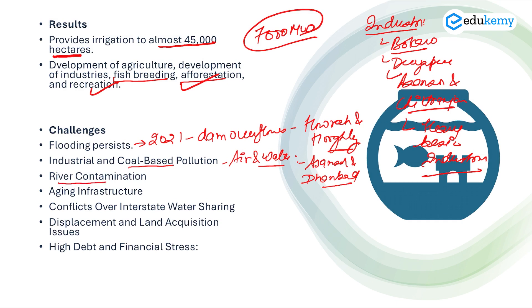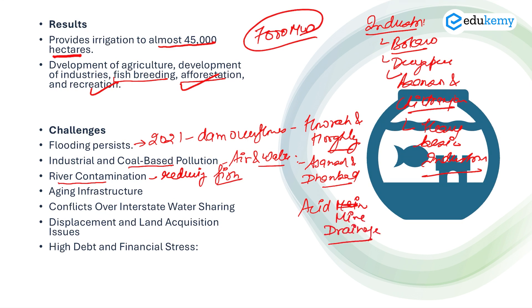Another issue is river contamination. As industries discharge waste from iron, steel, and thermal plants, this not only contaminates the water but is also reducing the fish population. In fact, Jharia coal mines are known to release acid mine drainage, which is making the water unfit for drinking and agriculture purposes.